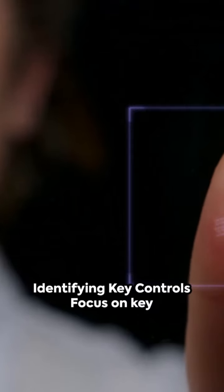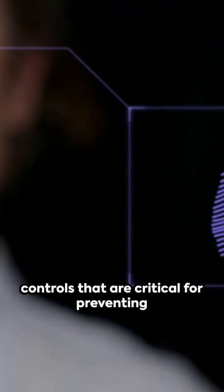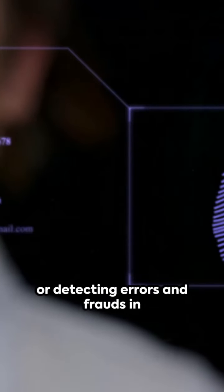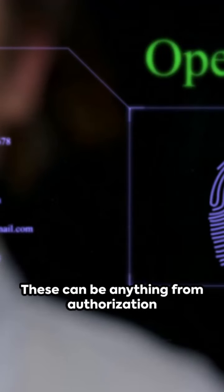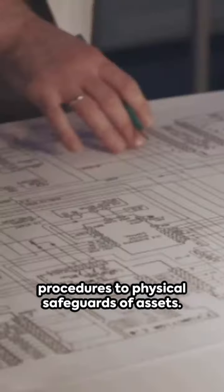Identifying key controls. Focus on key controls that are critical for preventing or detecting errors and frauds in financial reporting. These can be anything from authorization procedures to physical safeguards of assets.